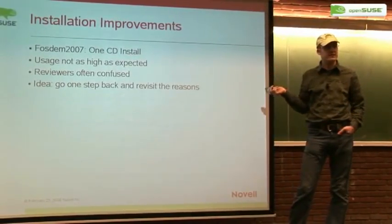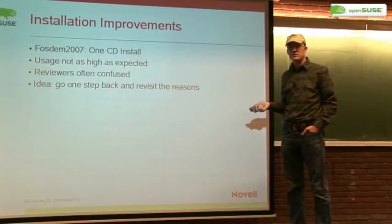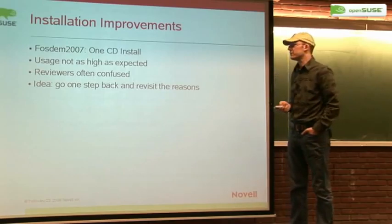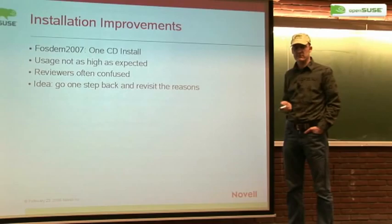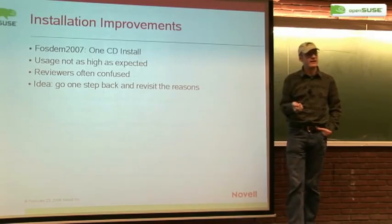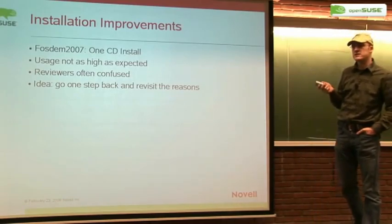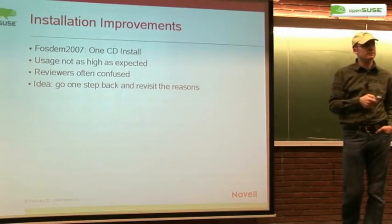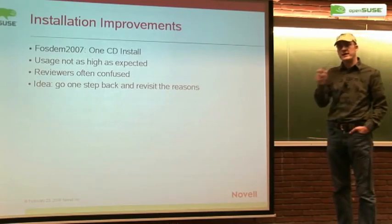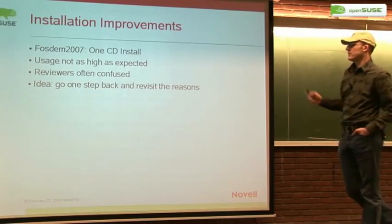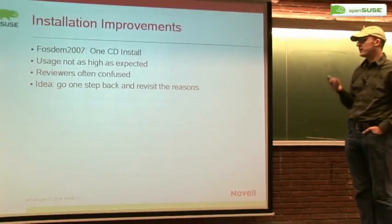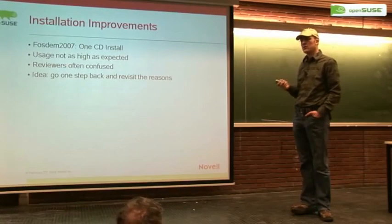We thought the DVD would be set aside and that everyone would just download 600 or 700 megabytes and then download the remaining 300 megabytes of software they need beyond the basic desktop. But our registration numbers show that the DVD is still a winner. We looked at what reviewers and journalists said about the installation and they were highly confused — the installation is so complex and offers so much, and there are issues around network registration not supporting Wi-Fi or certain drivers. So my idea when I took over development of 11.0 was to go one step back and think: why do we need a CD, and can we simplify it completely?